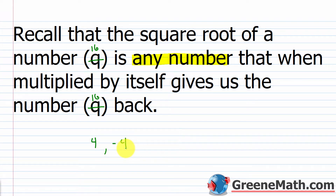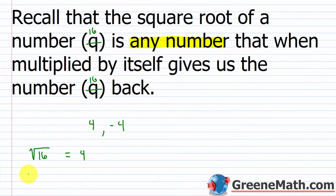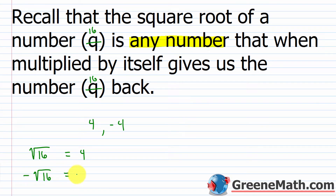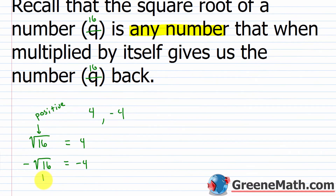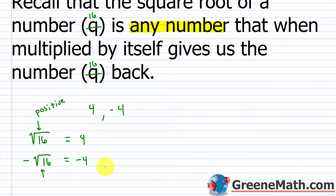When we talk about square roots, we notate the positive square root — what we call the principal square root — differently from the negative square root. The square root of 16 written with just the radical sign asks for 4. Writing negative in front of the radical asks for negative 4. The first is the principal square root of 16, and with the negative out in front, we're asking for the negative square root of 16.